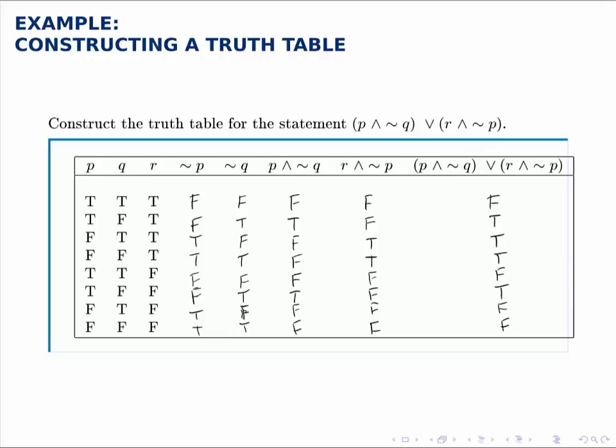Notice that all we've done is combine those two and anytime there was at least one true in those two columns, we put true in the last column, otherwise we put false.